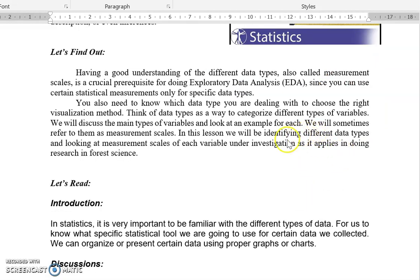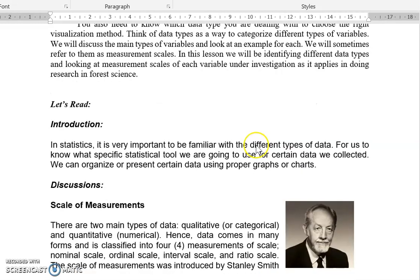For example, in forestry or agricultural researches, you will not use, like, analysis of variants with just merely identifying the sex of your goats, like male or female, because that is a nominal data type. So certain statistical analysis requires certain types of data for it to be analyzed and make right or proper conclusions. Now, as an introduction for this lesson, in statistics, it is very important to be familiar with the different types of data for us to know what specific statistical tool we are going to use for certain data we collected. We can organize or present certain data using proper graphs or charts.